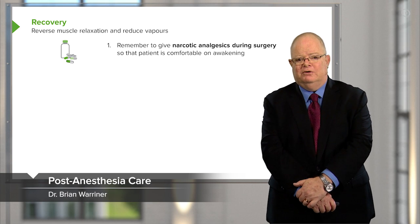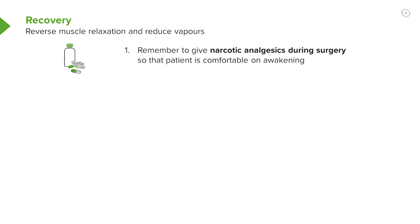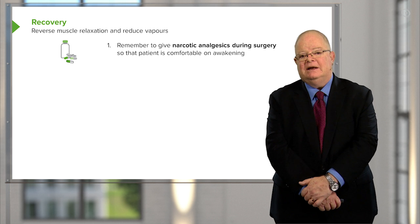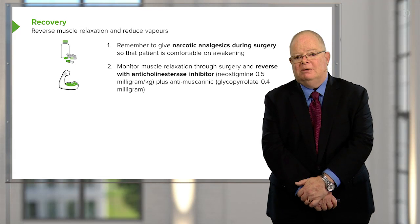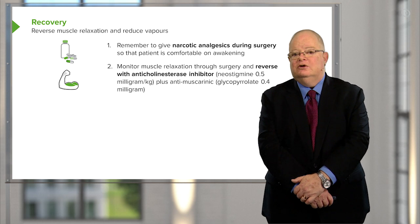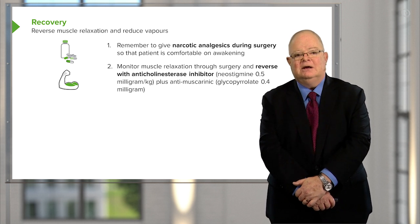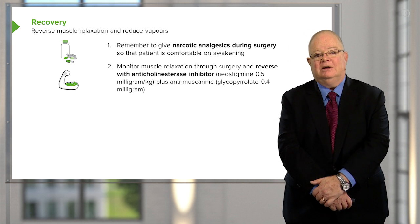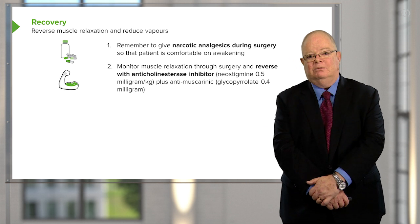Reversing muscle relaxation. As an overview of anesthesia maintenance and leading up to recovery, remember to give narcotic analgesics during surgery so that the patient is comfortable when they awaken — many of us give a little extra right at the end of surgery so the patient has a minimum of pain. Monitor muscle relaxation throughout surgery and reverse it with an anti-cholinesterase inhibitor such as neostigmine at about 0.5 mg/kg, and add an anti-muscarinic such as glycopyrrolate 0.4 mg.